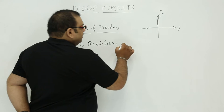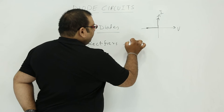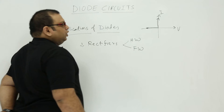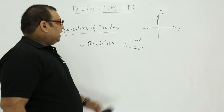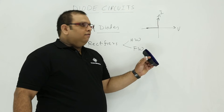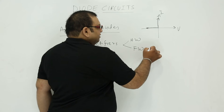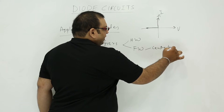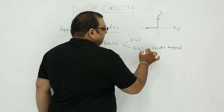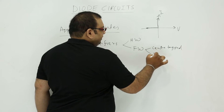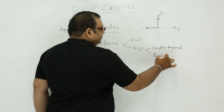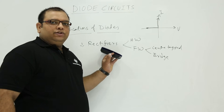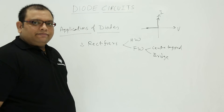Rectifiers are classified as half wave rectifiers and full wave rectifiers. In full wave rectifiers, there are two types: one is the center tapped rectifier and the other is the bridge rectifier. These rectifiers convert AC to DC — that is one major application of the diode.